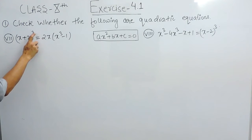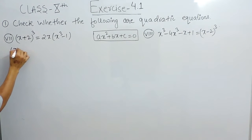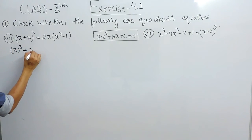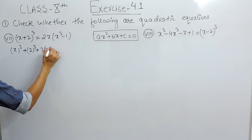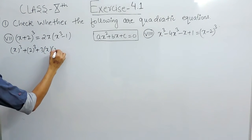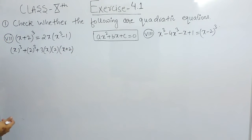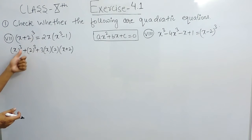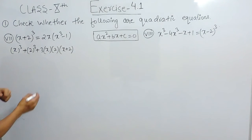This is (a + b) whole cube. And we know that the formula of (a + b) whole cube is basically a cube plus b cube plus 3 times a times b times (a + b). So this is our formula: (a + b)³ = a³ + b³ + 3ab(a + b).